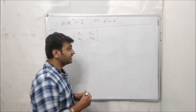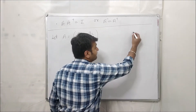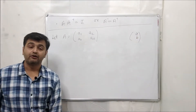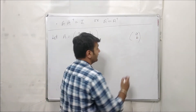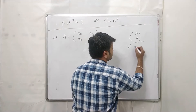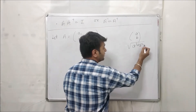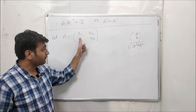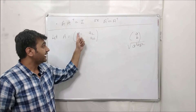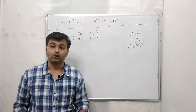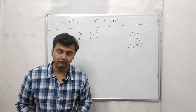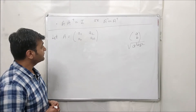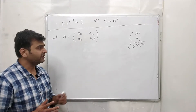Now what do you mean by length? If I have a vector (a, b), the length of this vector is nothing but the square root of a² plus b². We will see that the length of the column vectors and the length of the row vectors is always one for an orthogonal matrix.